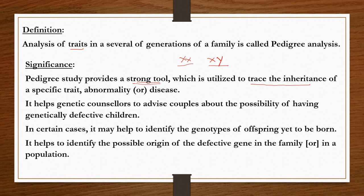Pedigree analysis helps genetic counselors advise couples about the possibility of having genetically defective children. This relates to what we have studied under reproductive health — amniocentesis, a test to identify chromosomal disorders by testing the amniotic fluid.